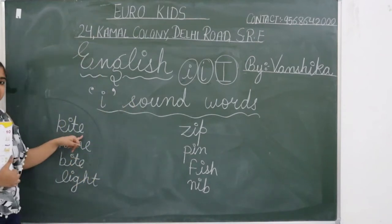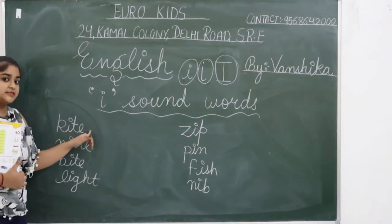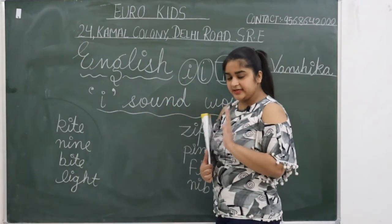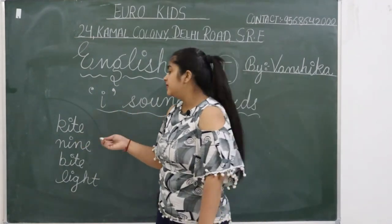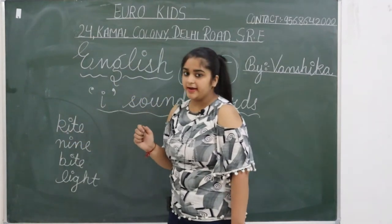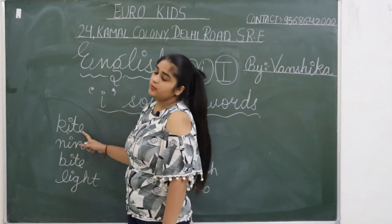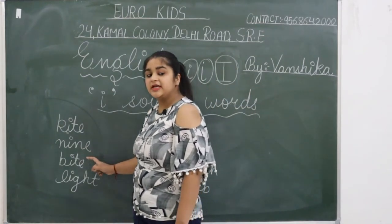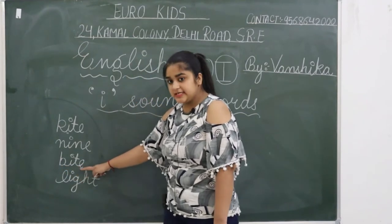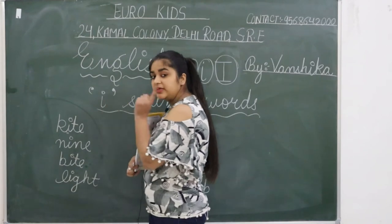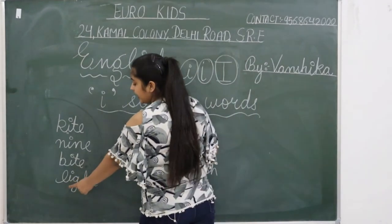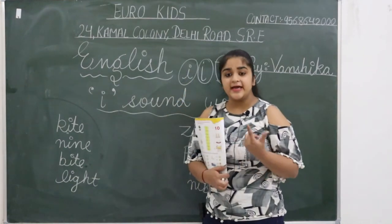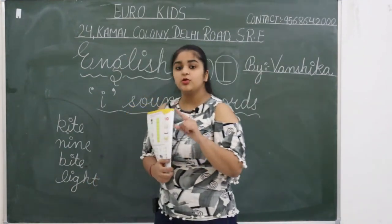Like K-I-T-E. How do you pronounce this? Kite. In 'kite,' the I sound is I itself — we say 'kite,' not 'keet.' The I is pronounced as I. K-I-T-E becomes Kite. N-I-N-E. B-I-T-E — what does it become? Bite. Here also the I pronunciation is I. L-I-G-H-T — what does it become? Light. L-I-G-H-T — Light. In all these words, I is pronounced as I.